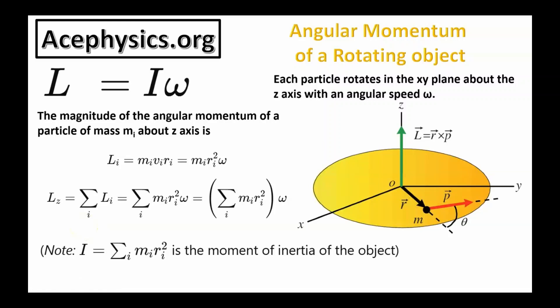If I sum up the angular momentum of every mass element, I get the angular momentum of the entire object, which equals the sum of MR squared times omega. Each mass element has the same angular velocity omega, and this sum is equal to the moment of inertia. This leads to the important formula: L equals I omega, where I is the moment of inertia and omega is the angular velocity.